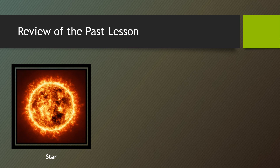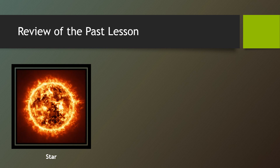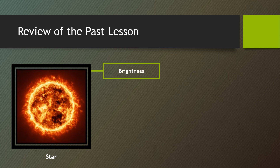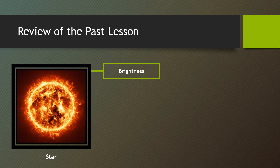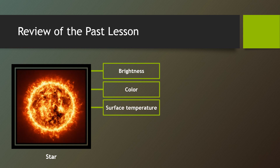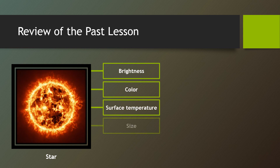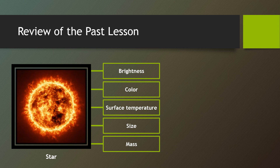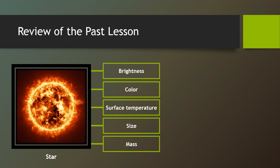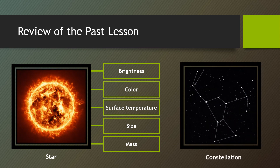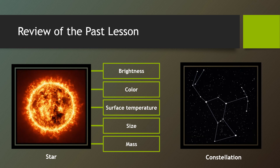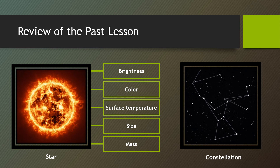For the review of the past lesson, we all know that stars have different characteristics such as the brightness, the color, the surface temperature, the size, and of course the mass. Last time, we also talked about the constellations, or the group of stars that form a particular pattern.